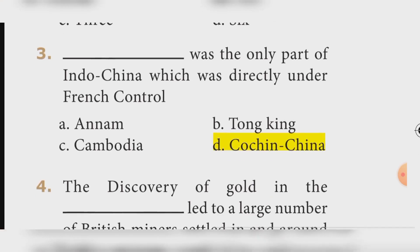Question three: Cochin China was the only part of Indochina which was directly under French control. Answer: Option B — Cochin China.